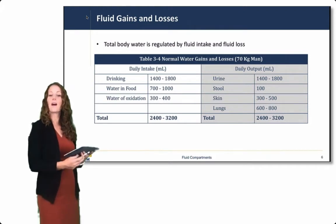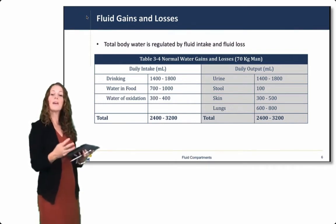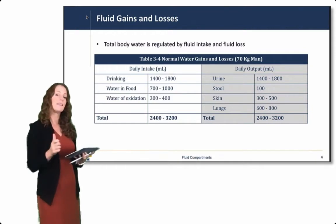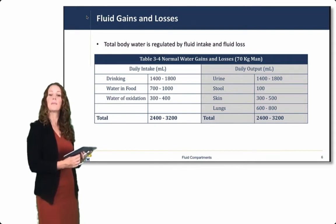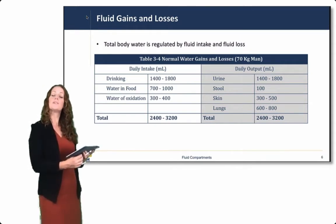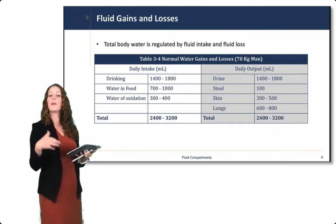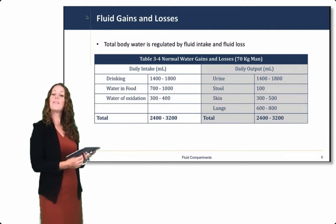It's important to think about fluid gains and losses in the body. Total body water is regulated by fluid intake and fluid loss. Here we have a chart from your textbook of daily intake and output of normal water gains and losses for that 70 kilogram male. Daily intake includes drinking, water in our food, and water produced by oxidation through cellular metabolism. That total is about 2,400 to 3,200 milliliters per day. To keep everything balanced, the daily output should also be similar. We lose water in the urine, the stool, the skin through sweat, and the lungs through evaporation.